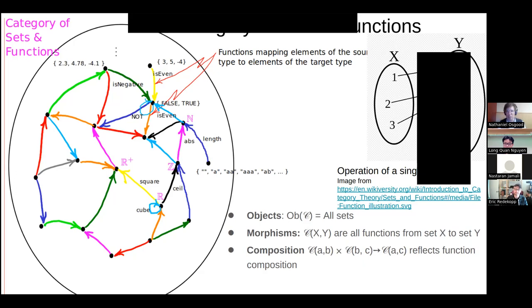There's a nicer well-behaved category called FinSet, where we use only finite sets and functions between them. This makes things cleaner, though it rules out things like the real numbers, integers, and natural numbers. FinSet will be our delight — it lets us think through these things with extra clarity, and we use it all the time when writing code in CatLab, as you will do because it is your destiny.